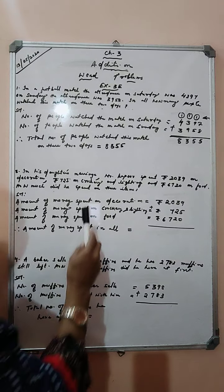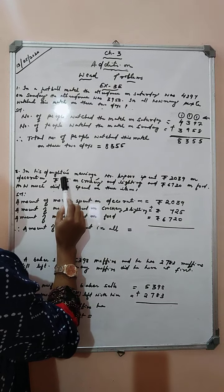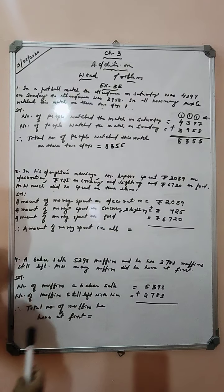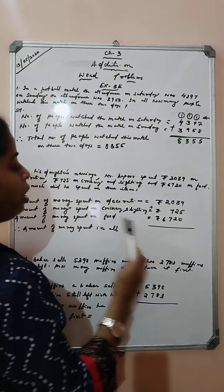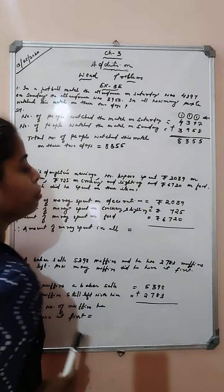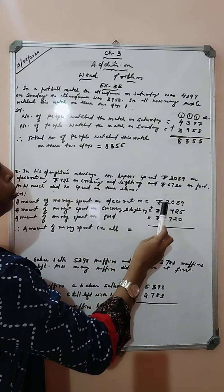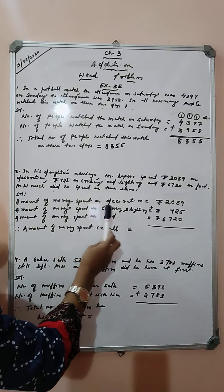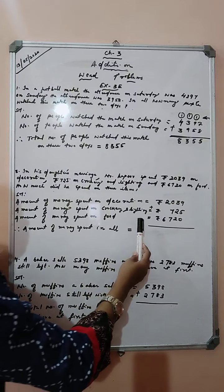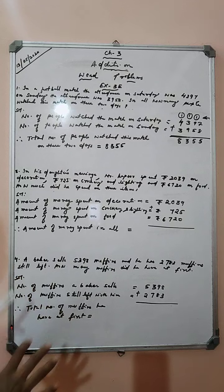Mr. Kapoor spent some amount on his daughter's marriage — Rs. 2,039 on decoration, Rs. 725 on crockery and lighting, and Rs. 6,720 on food. So, what was the total amount of money he spent in all? To find the total amount, we need to add these three numbers. The statement: amount spent on decoration is Rs. 2,039; on crockery and lighting is Rs. 725; on food is Rs. 6,720. Let us add these three numbers to find the total.